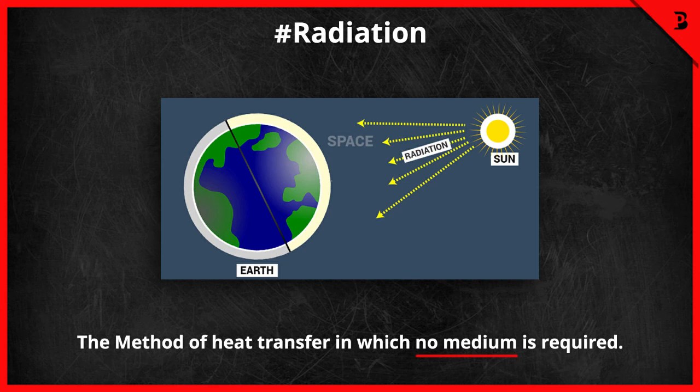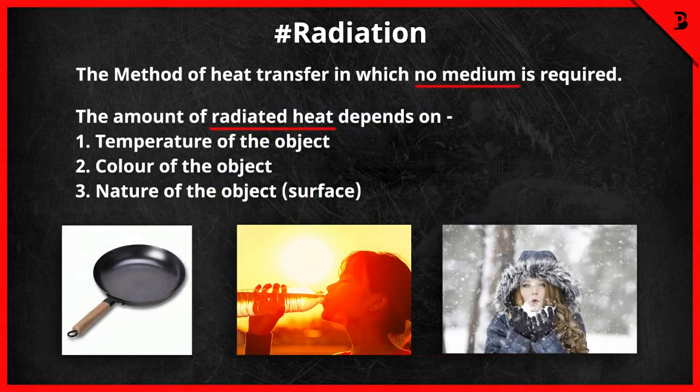The amount of radiated heat depends on three things: first, the temperature of the object; second, the color of the object; and third, the nature of the object. Because of this, black-colored surfaces are good absorbers of heat, and that is why the bottoms of cooking utensils are painted black so that they can absorb more heat.